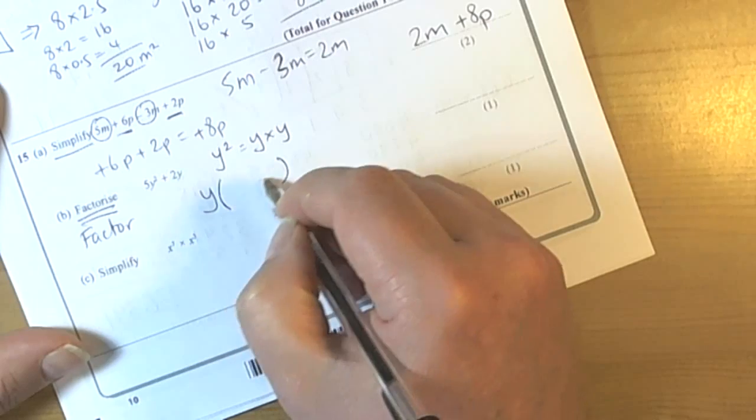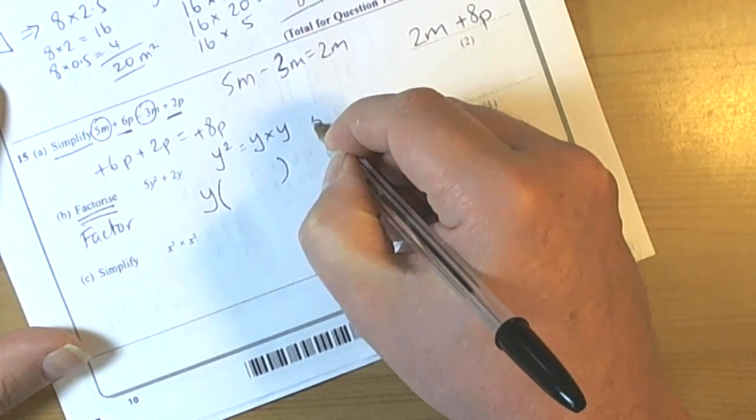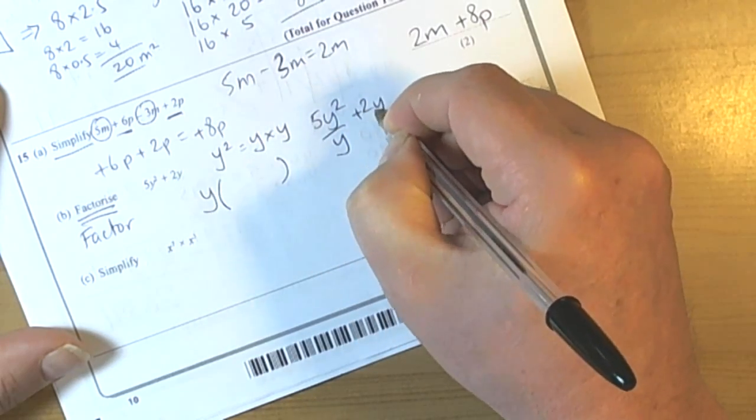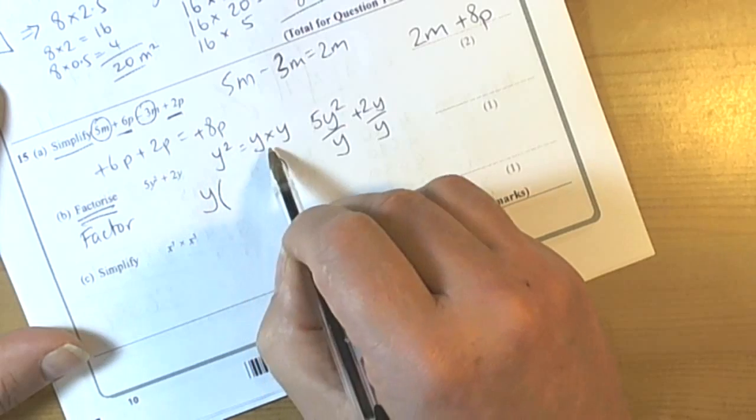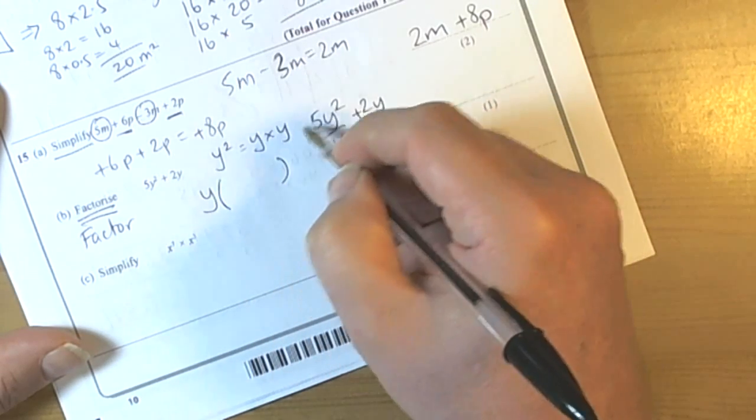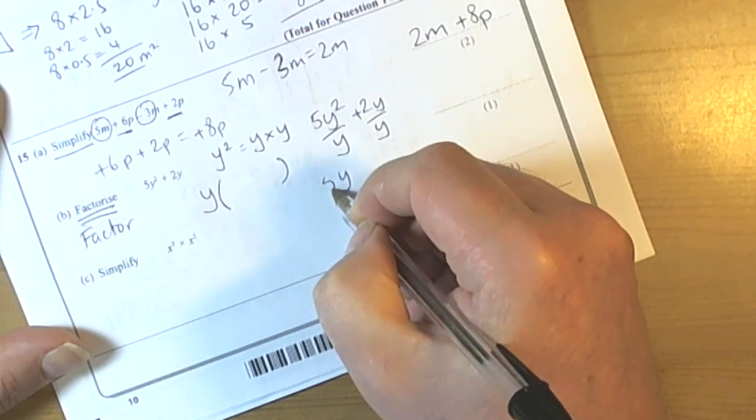Inside goes the remainder when you take the factor out. So we've got to do 5Y squared divided by Y, and then 2Y divided by Y. Y squared is Y times Y, so if we divide Y squared by Y, one of these Ys will cancel to leave us with just Y. But we've still got the 5, so 5Y.